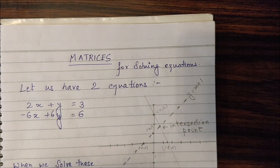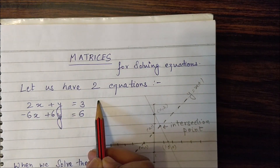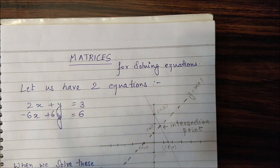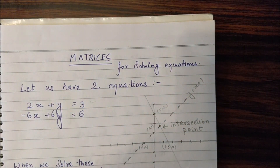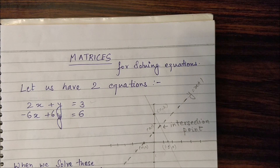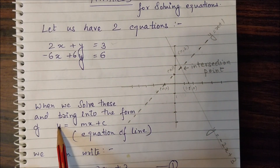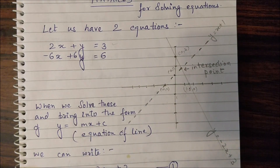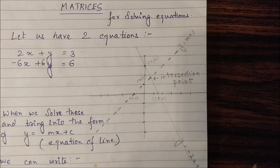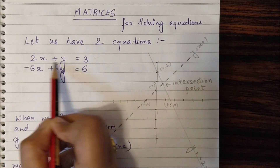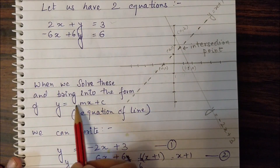For example, we have two equations: 2x plus y is equal to 3, and minus 6x plus 6y is equal to 6. Now if we plot these equations graphically — we know that whenever we have an equation with a single variable x, it is considered to be a linear equation. A linear equation can be written in the form y equals mx plus c, where m is the slope of that line.